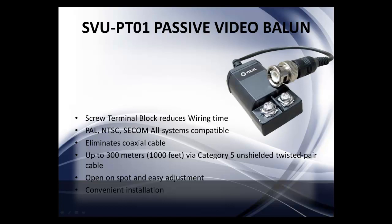Next is the SVU-PT01 passive balun. It has positive and negative terminals, but this one is a screw-in type — you slide in your wire and tighten the screw, securing the connection more firmly than the push-button type. It is a screw terminal block that reduces wiring time. It is also PAL, NTSC, and all-system compatible. It eliminates coax cable and can run up to 300 meters — 1,000 feet — via Category 5 unshielded twisted pair Ethernet cabling, with easy adjustment and conventional install.